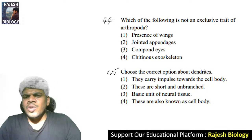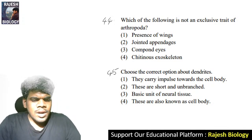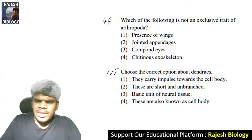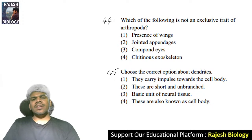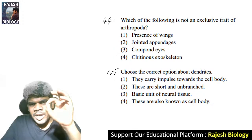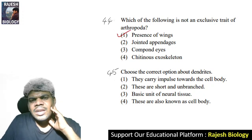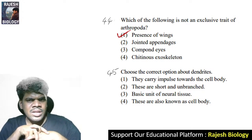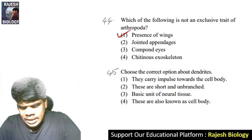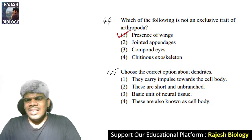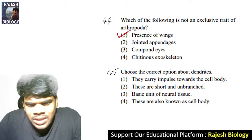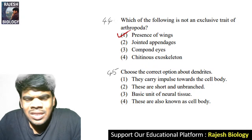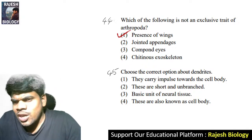Forty-fourth question: which of the following is not an exclusive trait of Arthropoda? Jointed appendages — that's why it is called Arthropoda. Compound eyes are present in all Arthropoda. Exoskeleton is made of chitin for all Arthropoda. But presence of wings is not exclusive to Arthropoda — only some insects like cockroaches and bees have wings, while prawn and crab in the same phylum do not. Arthropoda is the largest phylum in kingdom Animalia. Wings are not an exclusive property.